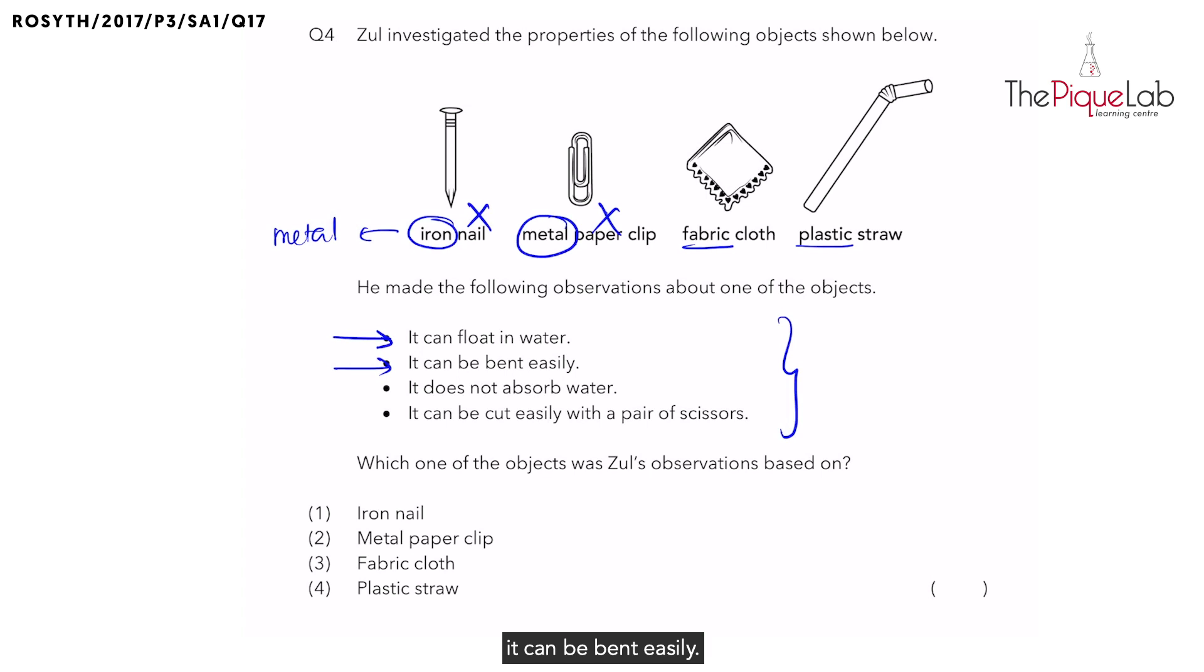It can be bent easily. Since we have eliminated both iron nail and metal paper clip as they do not fit the first observation, we will just focus on the fabric cloth and the plastic straw. And in fact, both fabric cloth and plastic straw can bend easily. So based on our second observation, we can't eliminate these two yet.